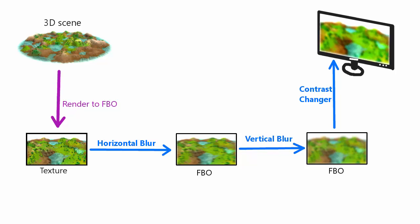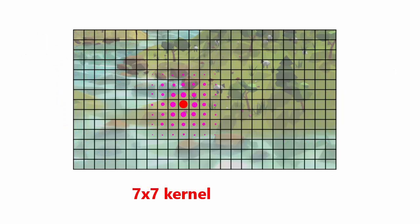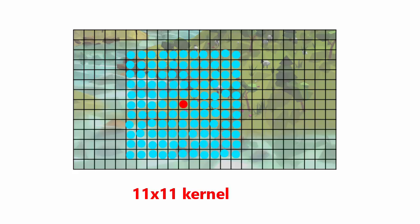You might be wondering why we have to split the Gaussian Blur into two stages. Surely it would be easier to do it in one stage — in the Fragment Shader we could simply sample an area of the texture, apply the weights, and add all the samples together. And this would indeed work, but with a 7x7 kernel it would require 49 texture samples per pixel. We're using an 11x11 kernel, which would require 121 texture samples per pixel — not very good for performance.